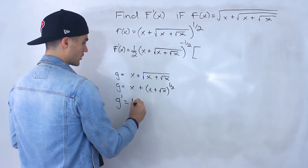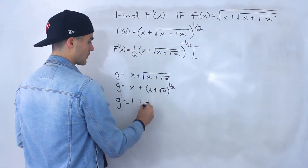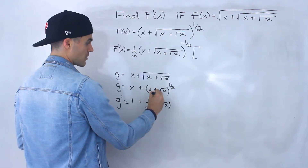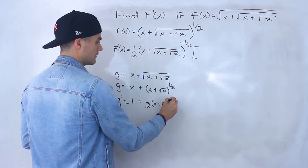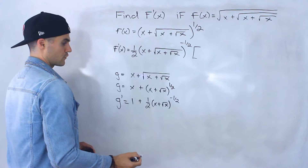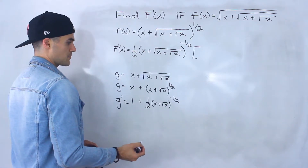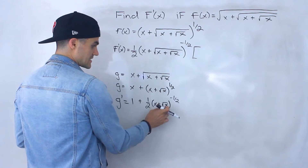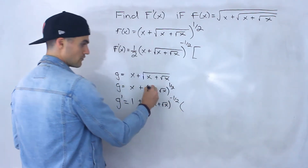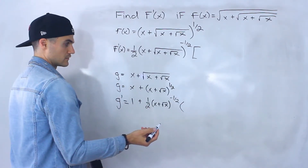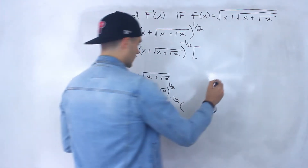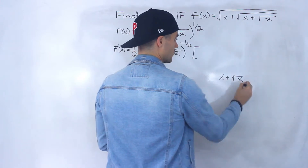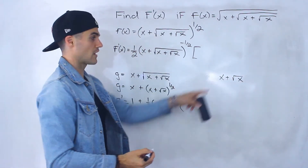Then over here, what we do is bring the one half down in front of the bracket. The inside function — notice there's another function in this bracket — stays the same. Subtract one from the exponent. And now we've got to multiply this by the derivative of the inside function. So I'm going to take this function, x plus the square root of x, and find the derivative of that.